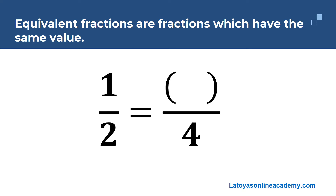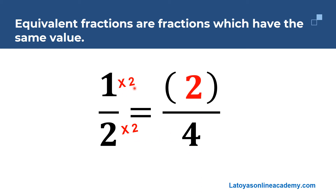In this example, we have one half is equal to something over four. The first thing I need to do is look at my denominators. I can see I'm going from a smaller number to a bigger number. What operation do I have to do? What can I do to two to get four? I can multiply by two. Because we want to make an equivalent fraction, whatever you multiply the denominator by, you also have to multiply the numerator by. Two twos are four and one times two is two. So one half is equivalent to two quarters.